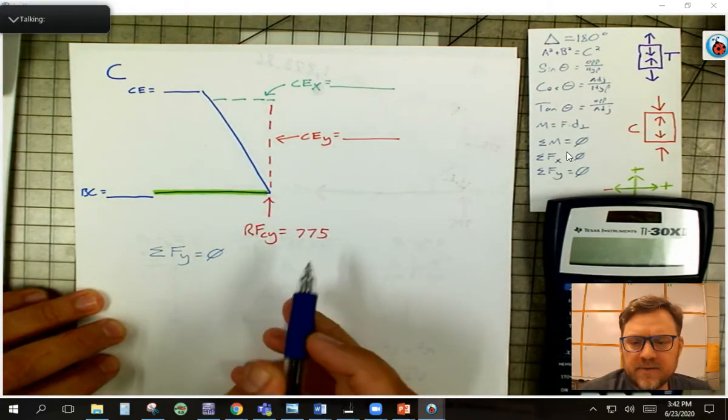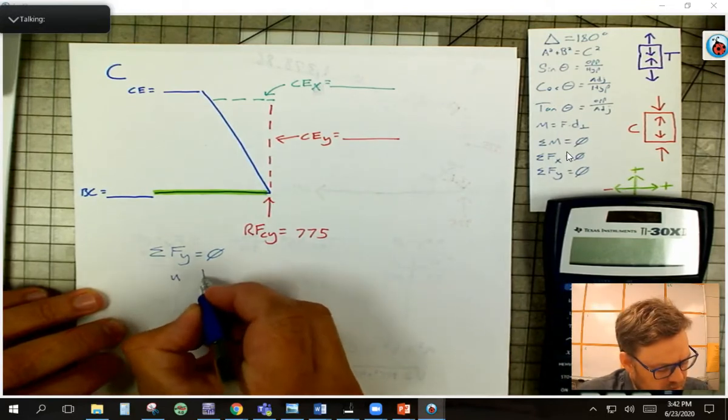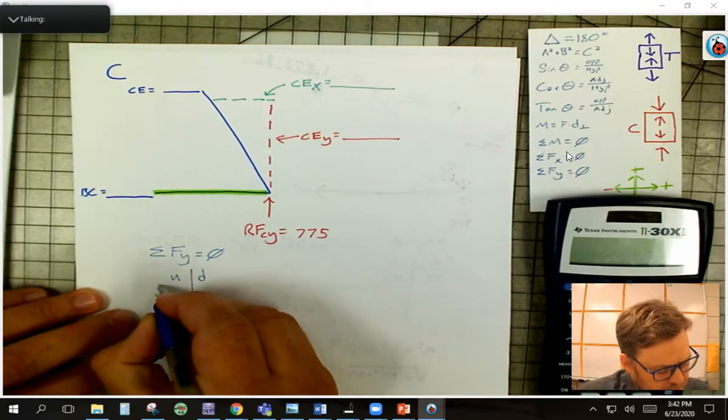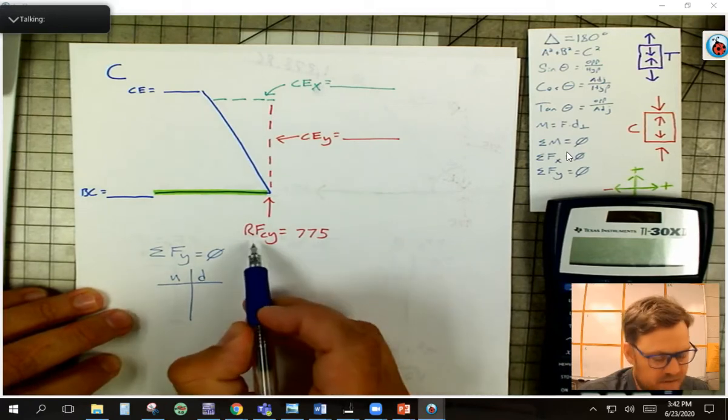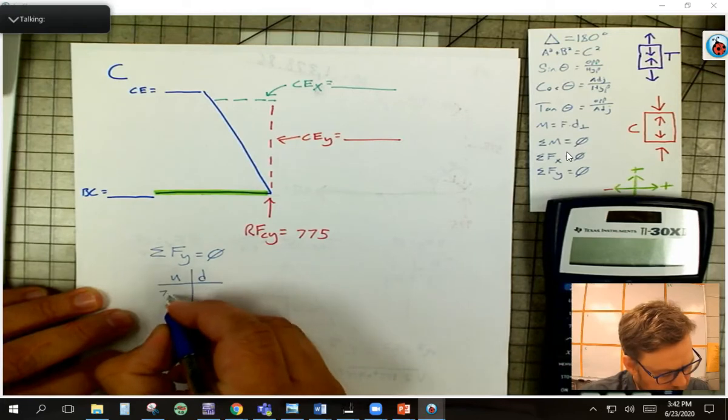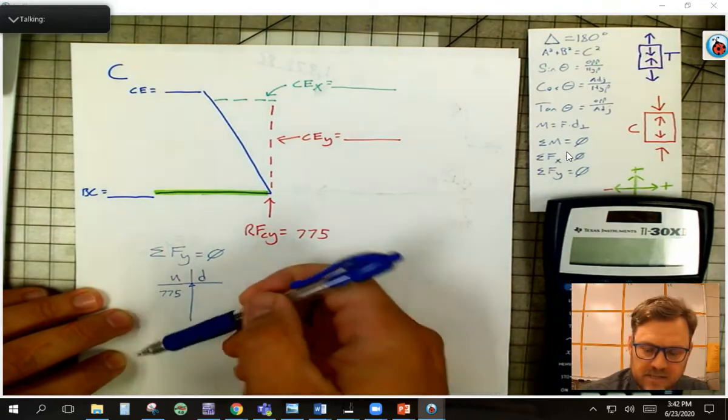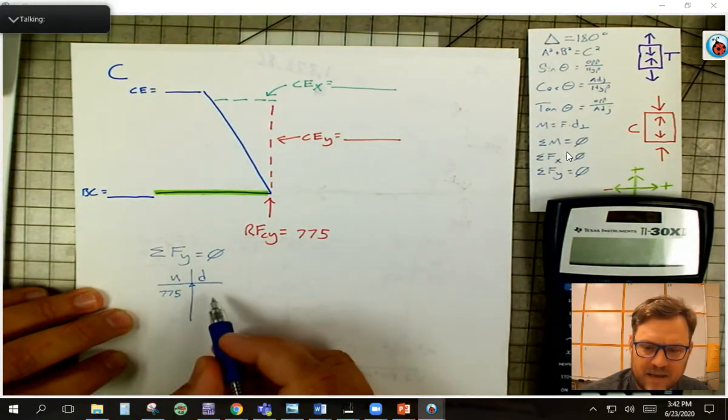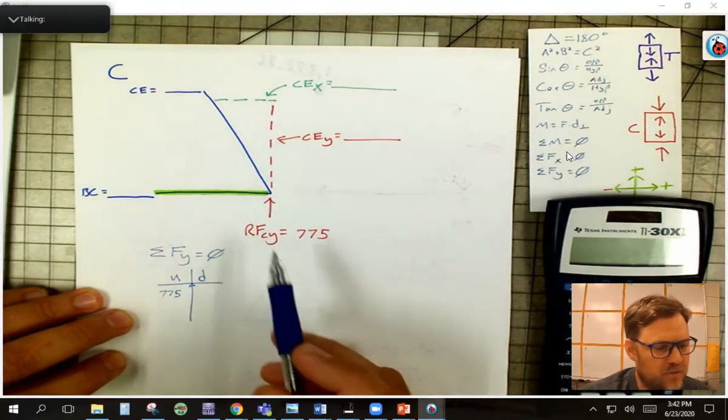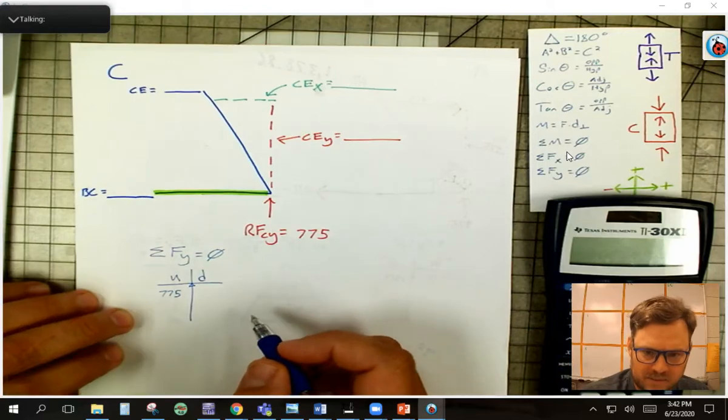Now, when I look at this, I've got the things in red that are in Y, and so what goes up must come down. When I look at this, I have this reaction force, C in the Y is 775. It's going up. Remember, this is like the teeter-totter. I put my fulcrum there, and so I need those things to balance. Well, that means I have to have 775 on this side. Well, I only have two things in the Y,